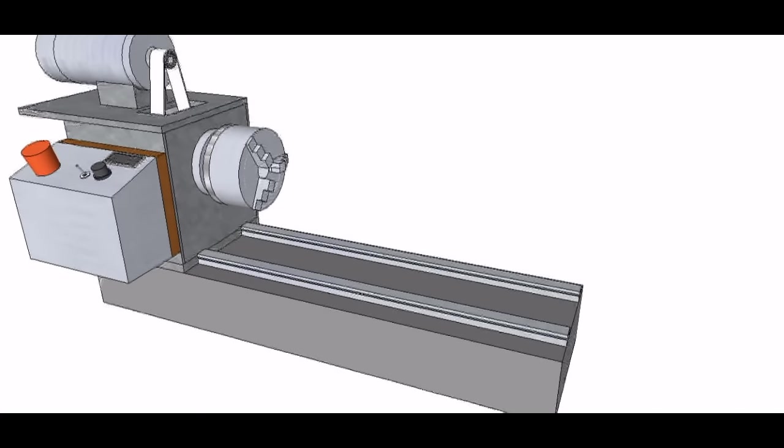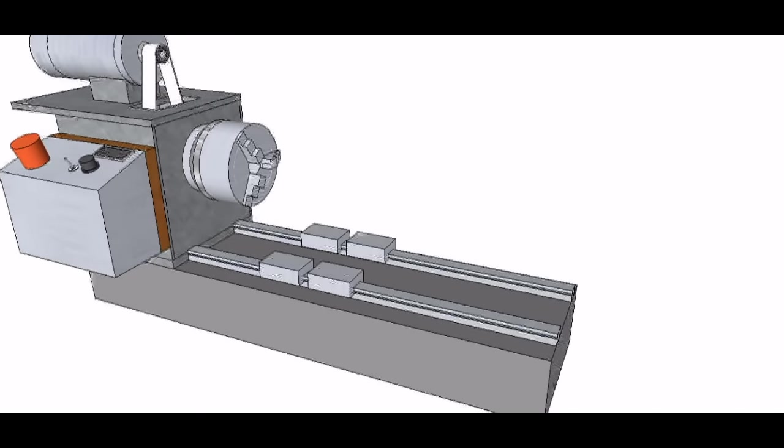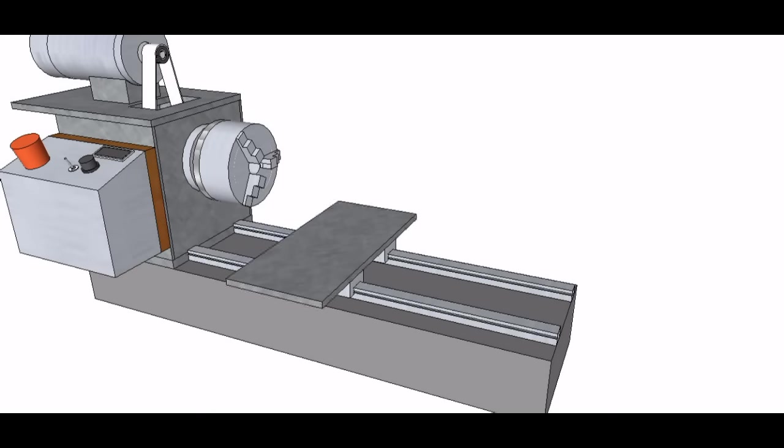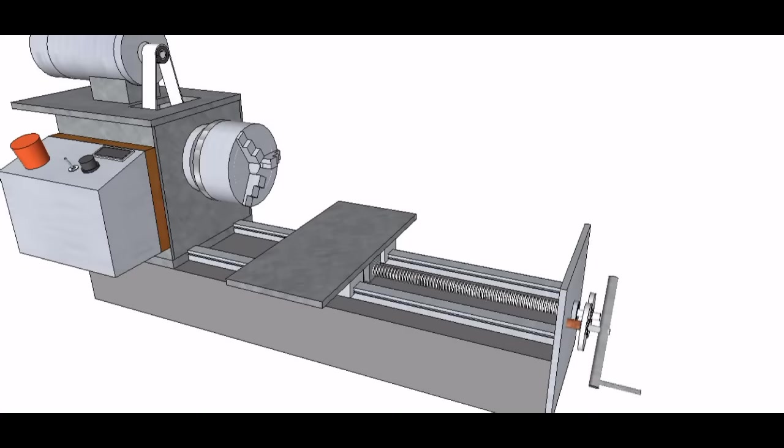The main carriage rides on 20mm linear bearing rails, which are 60cm long, with four roller bearing blocks. A 12mm steel plate is mounted onto the blocks and the carriage is moved by a long lead screw, which I can turn via a handle on the rear plate.